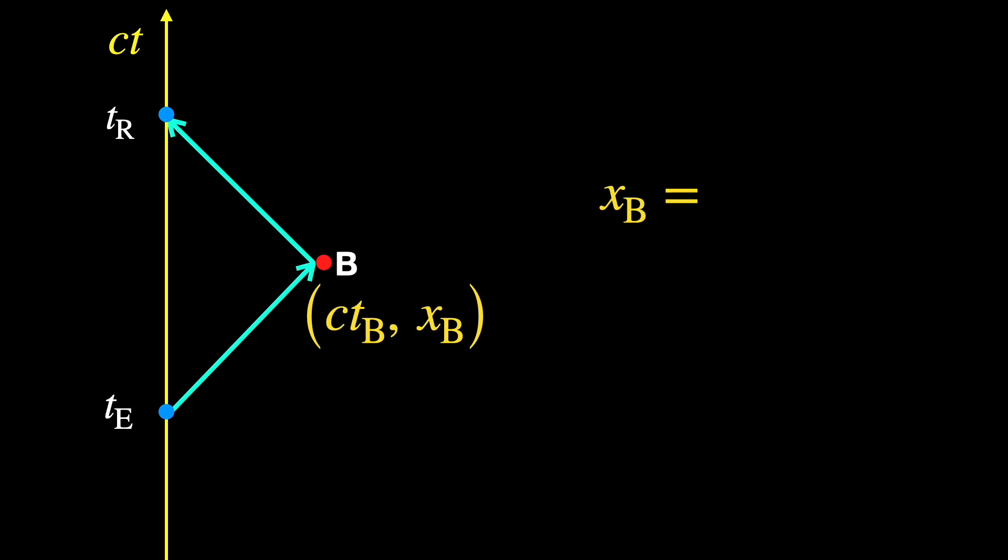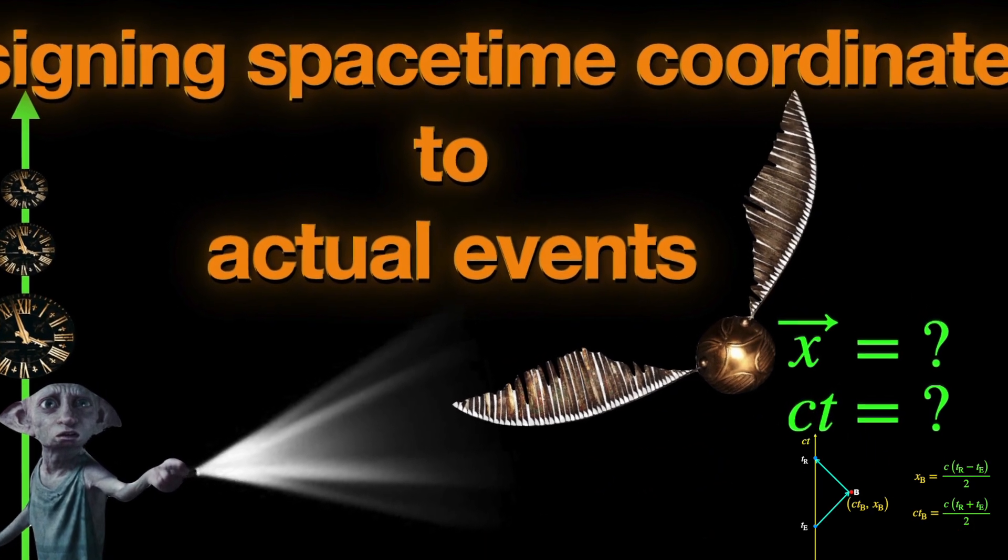So the method that works for any velocities involves the observer sending light signal to an event and catching the reflected signal back. If the observer notes down the emission and reception time of the signal, using that a unique set of spatial and temporal coordinates can be assigned to that event. This we have discussed in an earlier video, so let's not spend time on the details here.